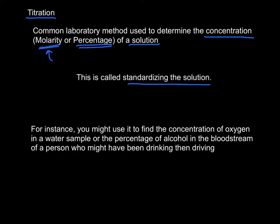For instance, you might use titration to find the concentration of oxygen in a water sample, or maybe to find the percentage of alcohol in the bloodstream of a person who might have been drinking and driving. You would never do that, of course — that would be horribly wrong.